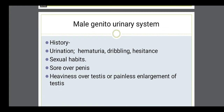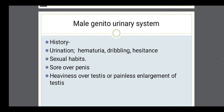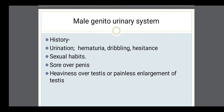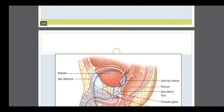For the male reproductive organ system, the subjective data will include asking the patient about the history of urination — whether the patient has a problem related to hematuria, any dribbling or hesitance, then any soreness over the penis, then any heaviness over the testes or unusual enlargement of testes, which can be cancerous.